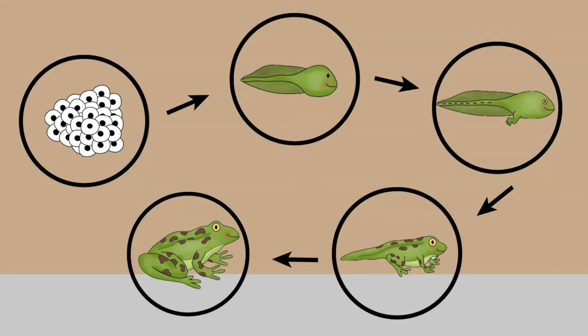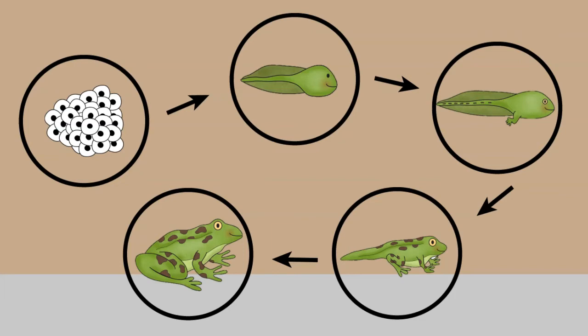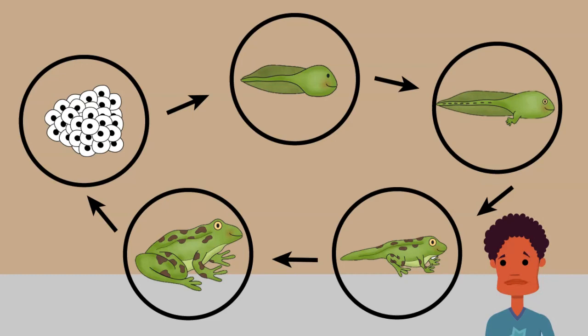It can leap onto land and live out of water. The adult female frogs lay eggs and then the cycle starts all over again. What stage is the frog after it hatches from the egg?